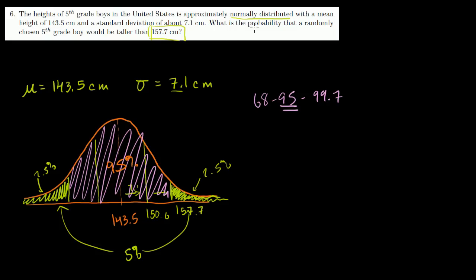So to answer the question, what is the probability that a randomly chosen fifth grade boy would be taller than 157.7 centimeters? Well, that's literally just the area under this right green part, maybe I'll do it in a different color, this magenta part that I'm coloring right now. That's just that area, and we just figured it out. It's 2.5%. So there's a 2.5% chance we'd randomly find a fifth grade boy who's taller than 157.7 centimeters, assuming this is the mean, the standard deviation, and we are dealing with a normal distribution.